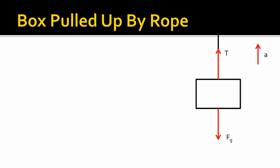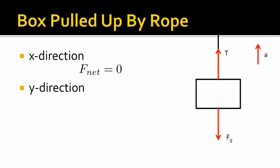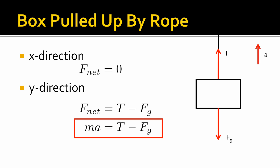Let's try a different example. Here we have a box being pulled upward by a rope — it's accelerating upward. We have our tension force and our force of gravity. In the x direction, there are no forces, so F net equals zero — nothing to do there. The y direction is more interesting because we have tension going up, gravity going down, and acceleration pointing up, so tension is positive and gravity is negative. This gives us our net force equation, and since there's nothing in the x direction, this is the only equation we need to solve the problem.